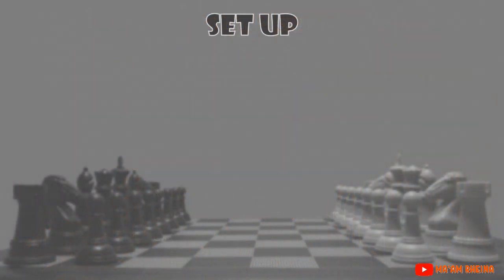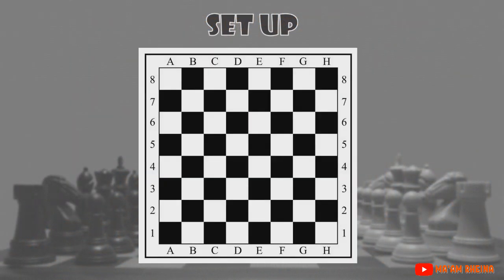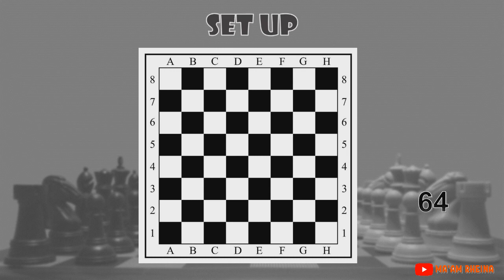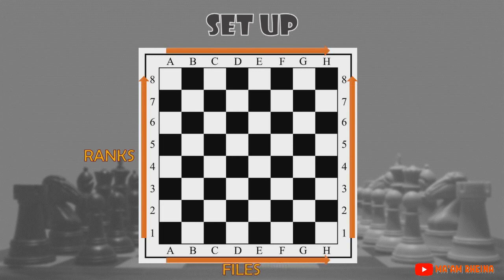Game Setup: chess is played on a square board divided into 8 rows called ranks and 8 columns called files, with a dark square in each player's lower left corner — altogether 64 squares. The colors are laid out in a checker pattern of light and dark squares. Each square has a name: each rank has a number from 1 to 8, and each file a letter from A to H, so every square has its own label, such as G1 or F5.